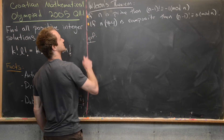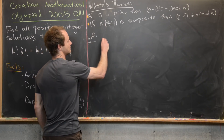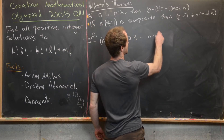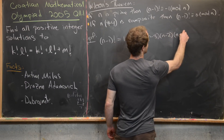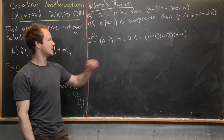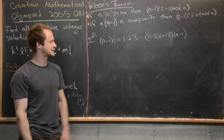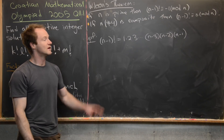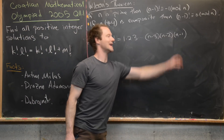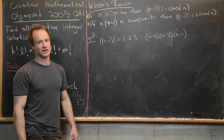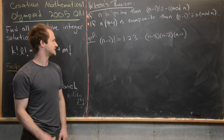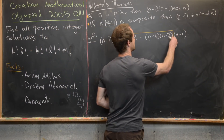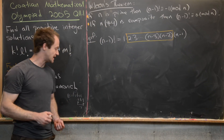Let's look at the proof of each part. For the first part where n is prime, take (n−1)! and write it as 1 × 2 × 3 × ⋯ × (n−3) × (n−2) × (n−1). Since n is prime, the numbers 1 through n−1 are all relatively prime to n, which means they all have unique multiplicative inverses modulo n. Furthermore, only 1 and n−1 are their own inverses modulo n, which means we can group every other number with its unique multiplicative inverse.